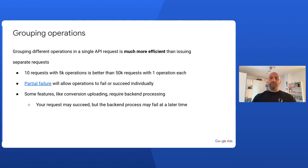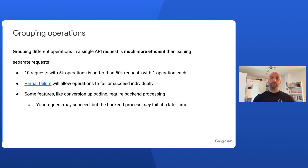As a rule of thumb, grouping together mutate operations in a single API request is a good practice, and you should be doing so as much as you can. Every request comes with a slight overhead, and grouping together your operations allows you to reduce this overhead and the overall payload size of your requests. Besides, if your operations don't belong to a process that is supposed to be atomic, you can set partial failure to true to make sure each of your operations will succeed or fail independently, returning mutated entities for successful operations and errors for failed ones. Keep in mind that even if your mutate request was successful, it does not necessarily mean that the whole process was. Some operations are computed asynchronously by the Google Ads backend, such as conversion uploading, that can then fail even if the API requests were successful.